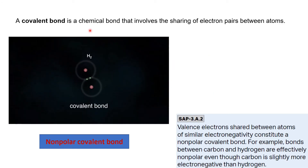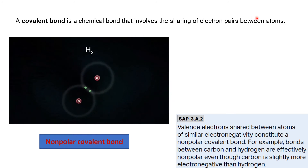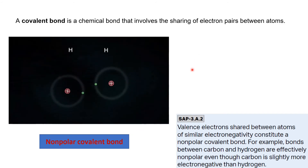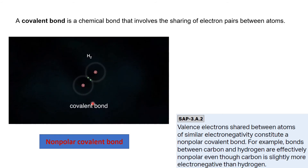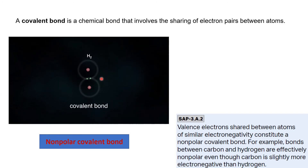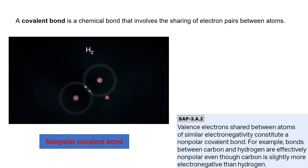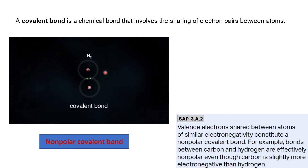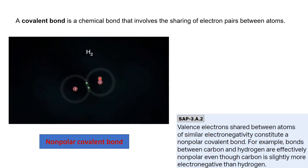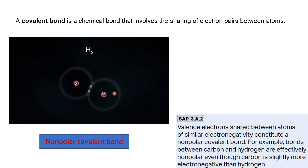The second type of bond is a covalent bond. A covalent bond is a chemical bond that involves the sharing of electron pairs between atoms. Unlike an ionic bond where the element gains or loses electrons, a covalent bond involves sharing of electrons. When similar elements or elements with almost the same electronegativity value come close to each other, a covalent bond is formed. For example, hydrogen atoms each have one valence electron; when two hydrogen atoms come close, they share one electron each and both have two electrons, making them stable. A covalent bond formed when there is not much difference in electronegativity is called a non-polar covalent bond.